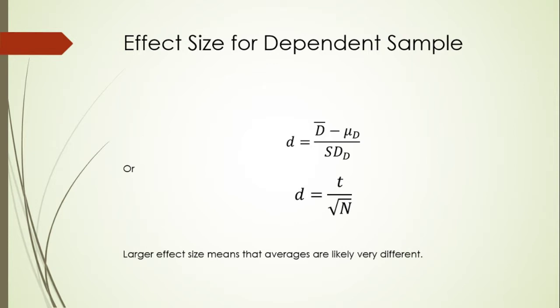Similarly, the effect size for dependent sample is d = (d̄ - μ_d) / SD_d, where d̄ is the mean of difference, μ_d is the population mean of the difference, and SD_d is the standard deviation of the difference.